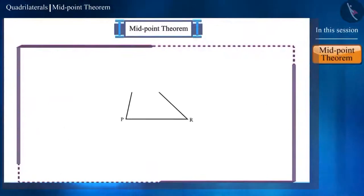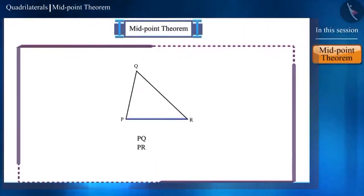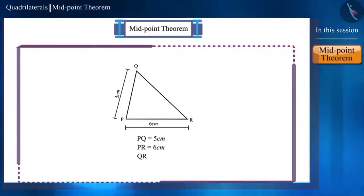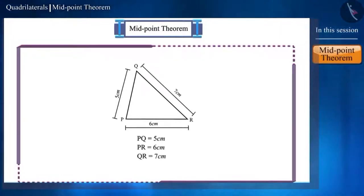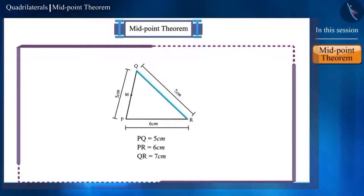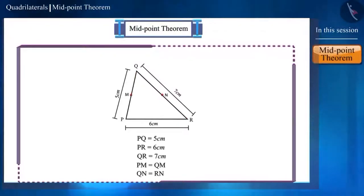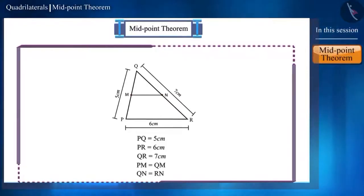Friends, draw a triangle PQR, the lengths of whose sides PQ, PR and QR are 5 cm, 6 cm and 7 cm respectively. Suppose the midpoint of side PQ is M and the midpoint of QR is N. That is, PM equals QM and QN equals RN. Draw a line segment MN by joining the points M and N.